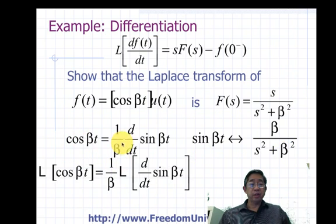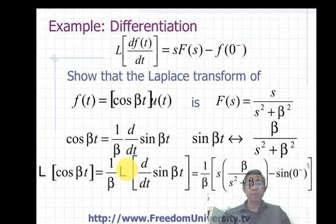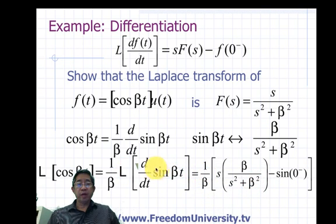So hence we'll take this expression here and take the Laplace transform on both sides of this equation. And when we do that, we substitute the Laplace transform of sine of beta t, since the original function F of s here is sine of beta t before we take its derivative.